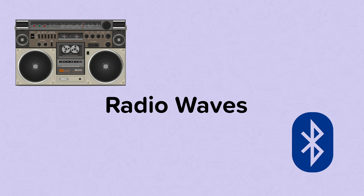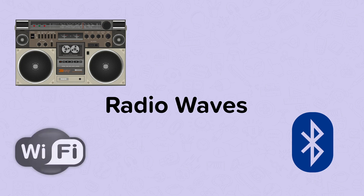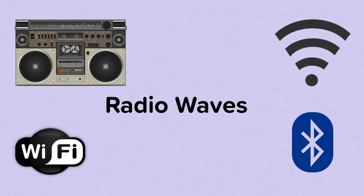Finally, we have radio waves. These are the lowest frequency, longest wavelength waves in the EM spectrum. They're used for communications such as sending radio signals over long distances, or short range for Wi-Fi and Bluetooth.